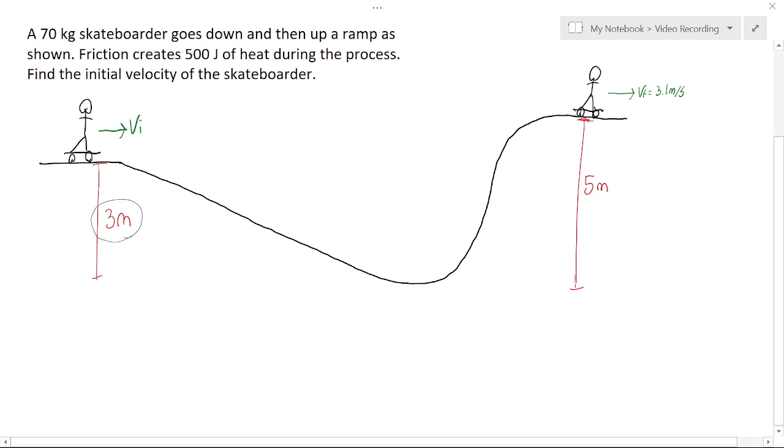In the image, we see that we start at a height of 3 meters, we end at a height of 5 meters, and we reach a final velocity of 3.1 meters per second.